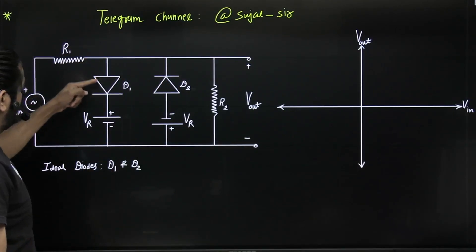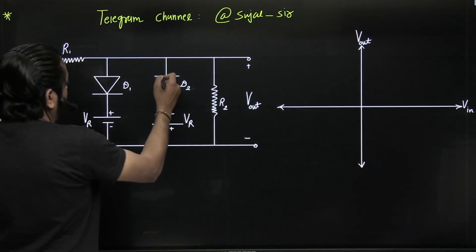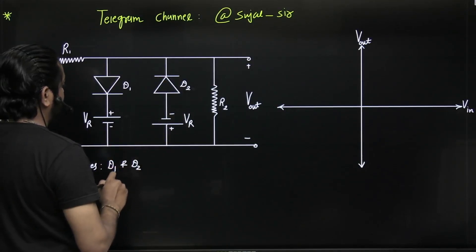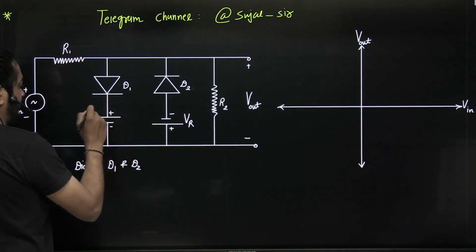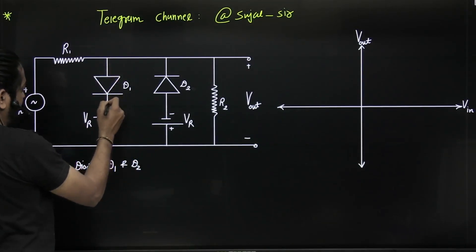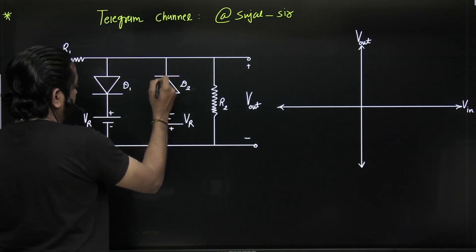See, this is the standard configuration. Downward direction, this higher battery, higher value battery. Upper direction, lower value battery. See, both batteries can be positive, both can be negative, one positive and one negative also.